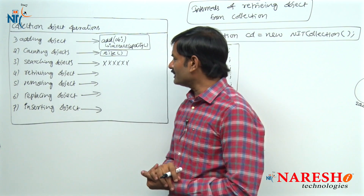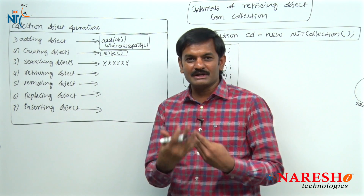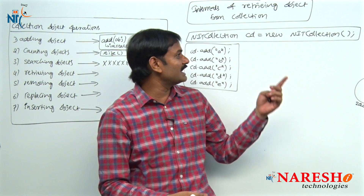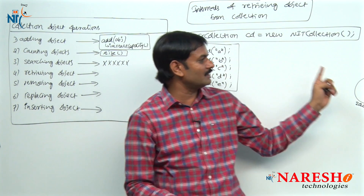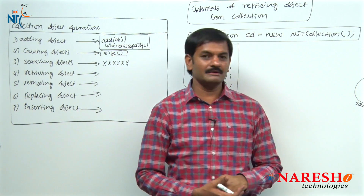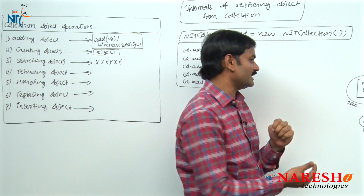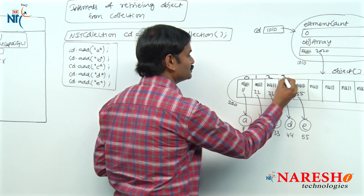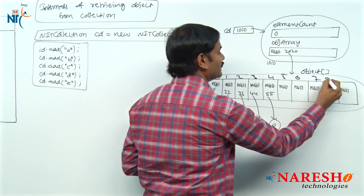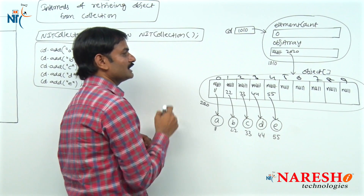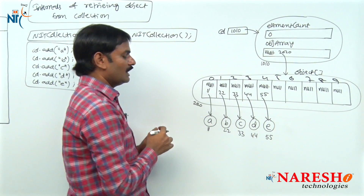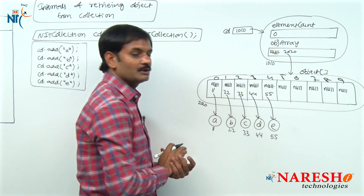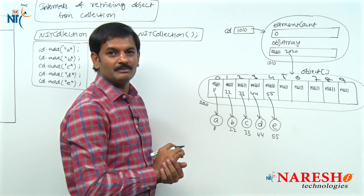For retrieving an object, what should I pass? I should pass the index number of the object. The collection will maintain objects with index numbers. Look at here - object 0, 1, 2, 3, 4, 5, 6, 7, 8, 9. Whenever you create a custom collection object, how many locations are created? We are creating an array object with 10 locations. I hope you remember the previous video.